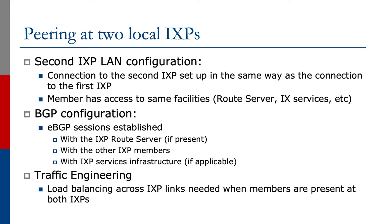The second Exchange Point LAN configuration would be set up in the same way as the connection to the first IXP. The member has access to the same facilities — they will probably run a route server and offer IX services and so on. Setting up BGP is straightforward: we establish eBGP sessions with the IXP route server, with the other IXP members, and with the IXP services infrastructure.